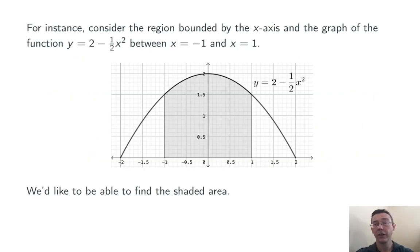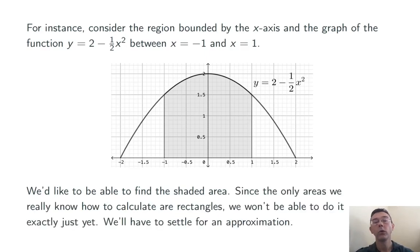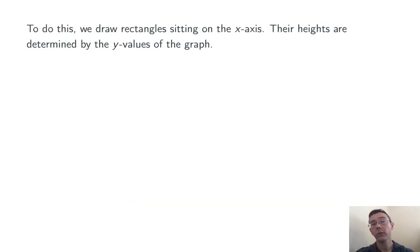Let's see an example of how we might go about this. Consider this region. It's bounded by the graph of y equals 2 minus one half x squared, the x-axis, and x equals negative 1 and positive 1. We can't compute the shaded area exactly right away. We don't know how to do curved regions just yet, so we're going to approximate it using rectangles. What we're going to do is draw a bunch of rectangles sitting on the x-axis, and their heights are going to be determined by the y values of the function.